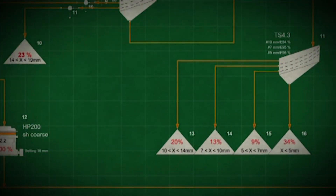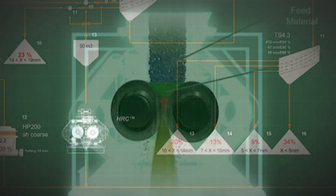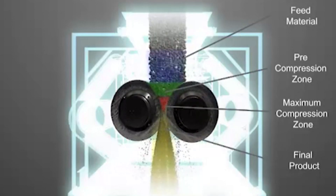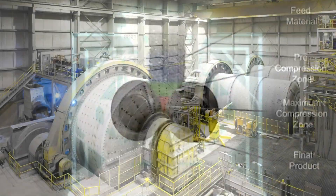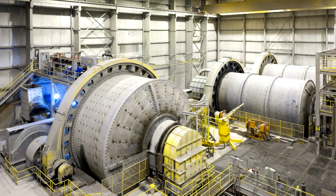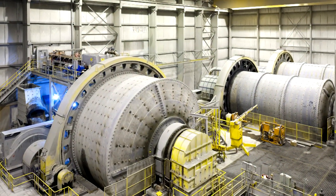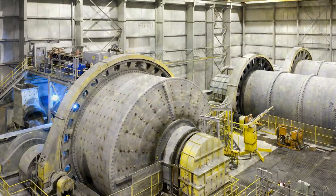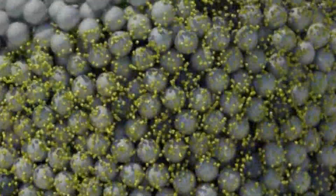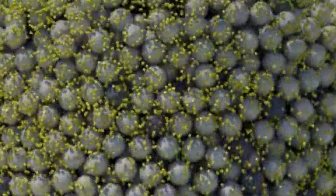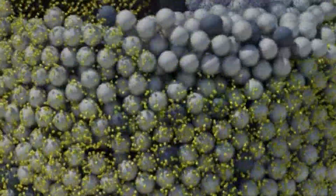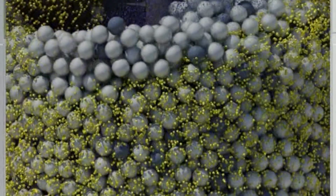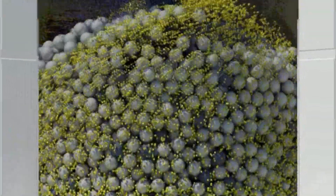Impact crushers, roll crushers, comb crushers, and grinding mills progressively reduce the particle size. Massive grinding or ball mills contain large hard spheres which roll and tumble to grind the ore particles between their surfaces.